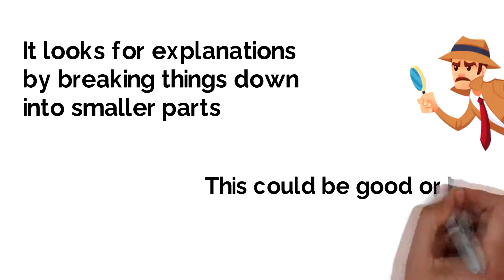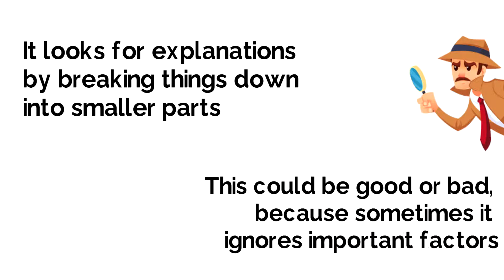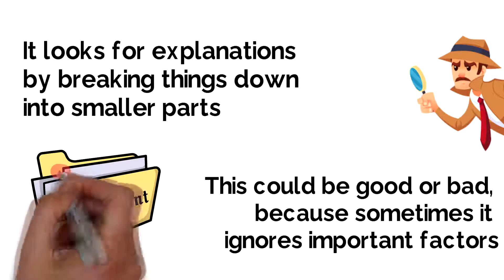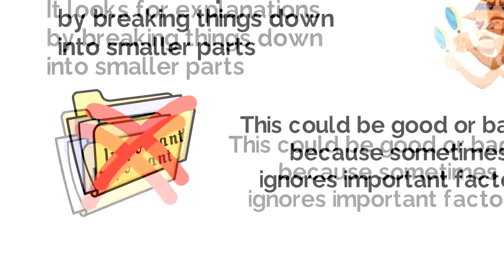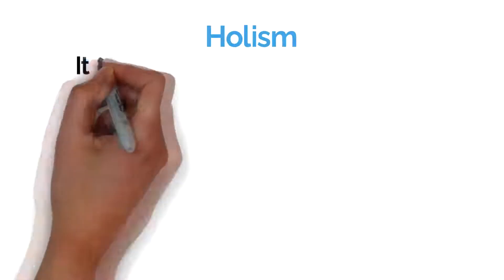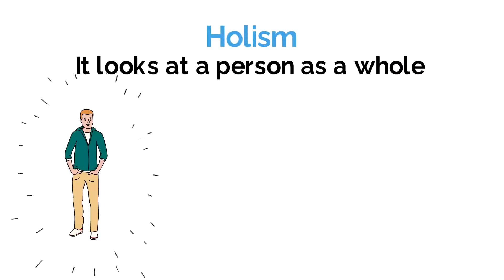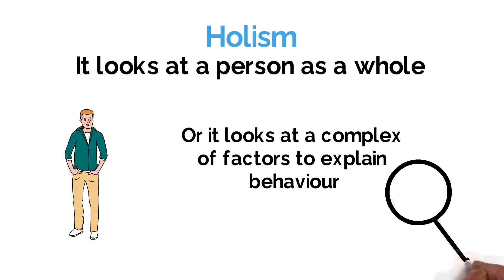This can be powerful but sometimes provides an explanation which is simplistic, ignoring other important aspects or factors. A holistic view looks at the person as a whole, or perhaps looks at a complex of factors which together might explain a particular behavior.